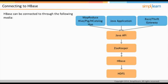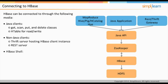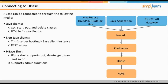You can connect to HBase using any of the following methods. HBase offers a Java API which can be used to conduct operations like get, scan, put, delete, and so on. Non-Java clients can connect to HBase using Thrift Service or REST services. HBase also offers a convenient shell built in JRuby where a majority of operations, including admin functions, can be performed from the command line. HBase can also be accessed via Hive, Pig, HCatalog, or Hue.